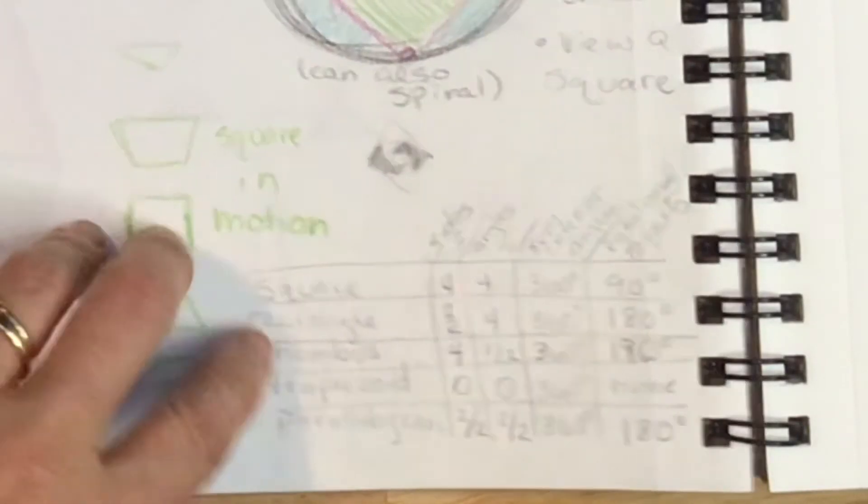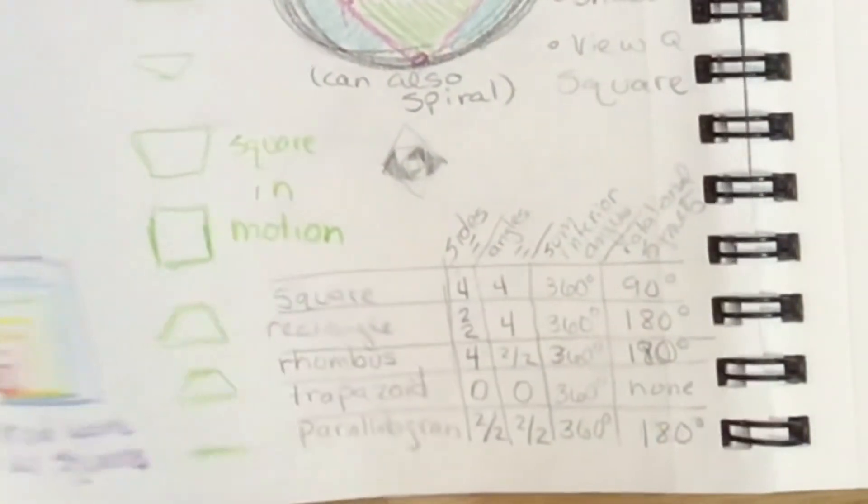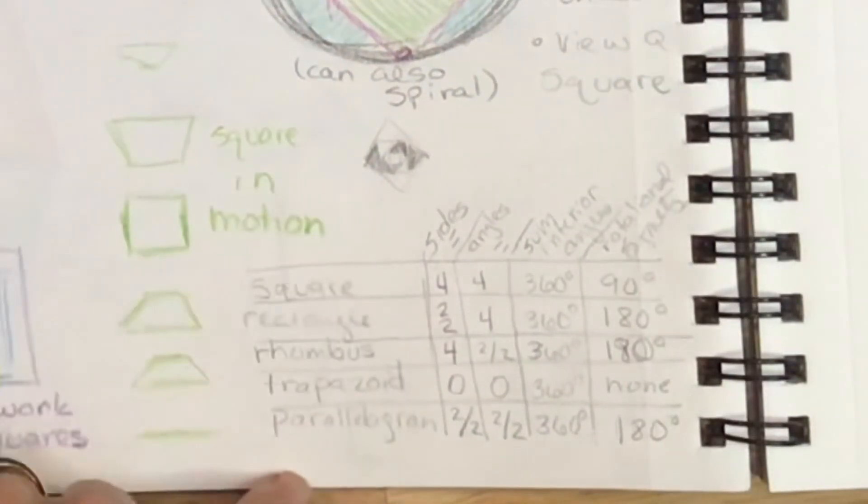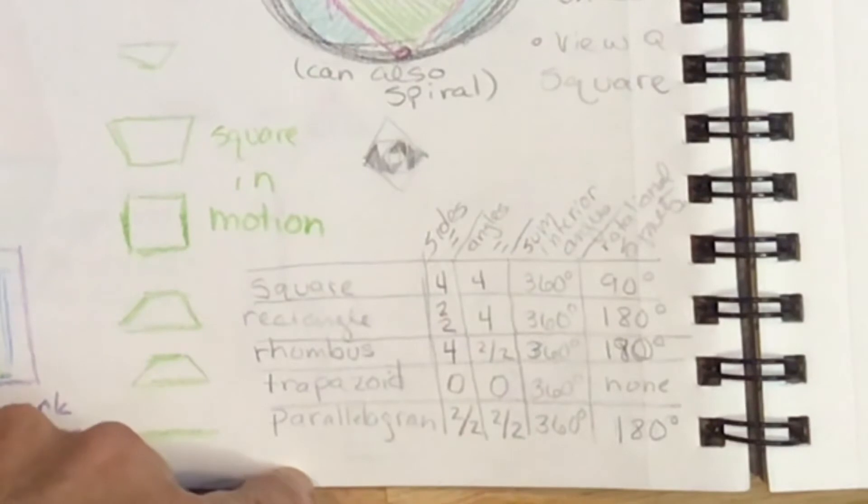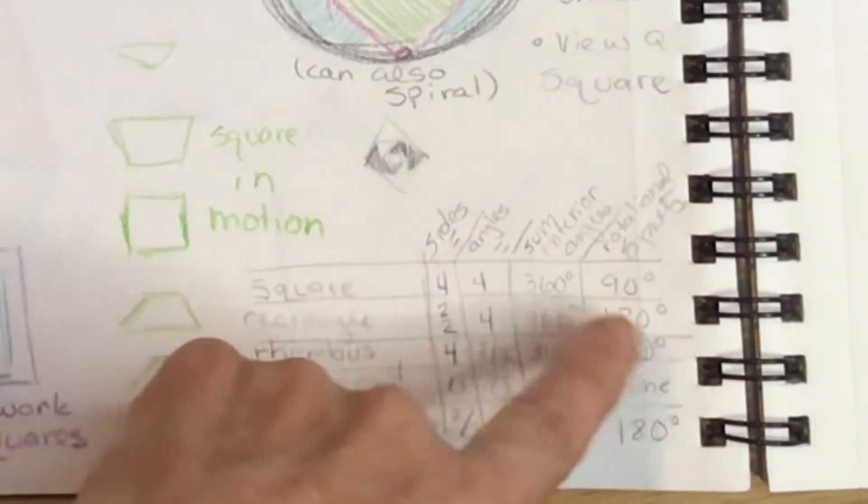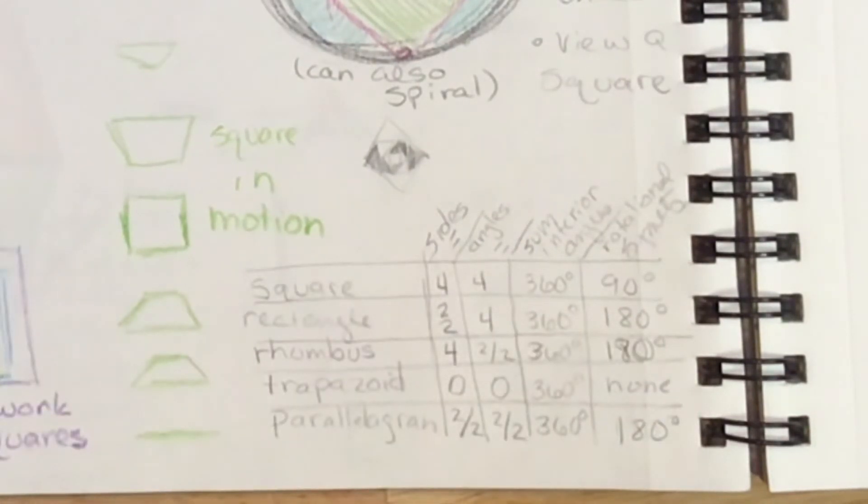And something new that we will do, well actually I plan on doing this with triangles too, but we will chart the different kinds of quadrilaterals and look at their similarities and differences in sides, angles, some of their interior angles, and their rotational symmetry and their regular symmetry as well.